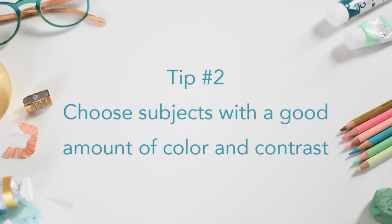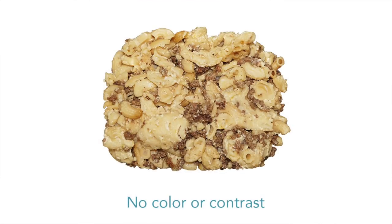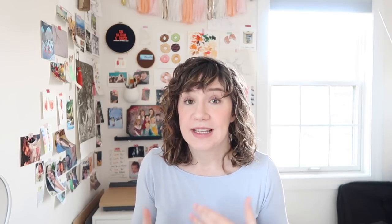Number two is to choose subjects that have a good amount of color and contrast, especially when painting plated food. In my experience, it's just really tough to make big piles of different beige, white, or brown foods look appetizing if there isn't color, contrast, or different textures. You may have the same problem as point number one — sometimes big piles of bland-colored foods just won't immediately look like food to the viewer.